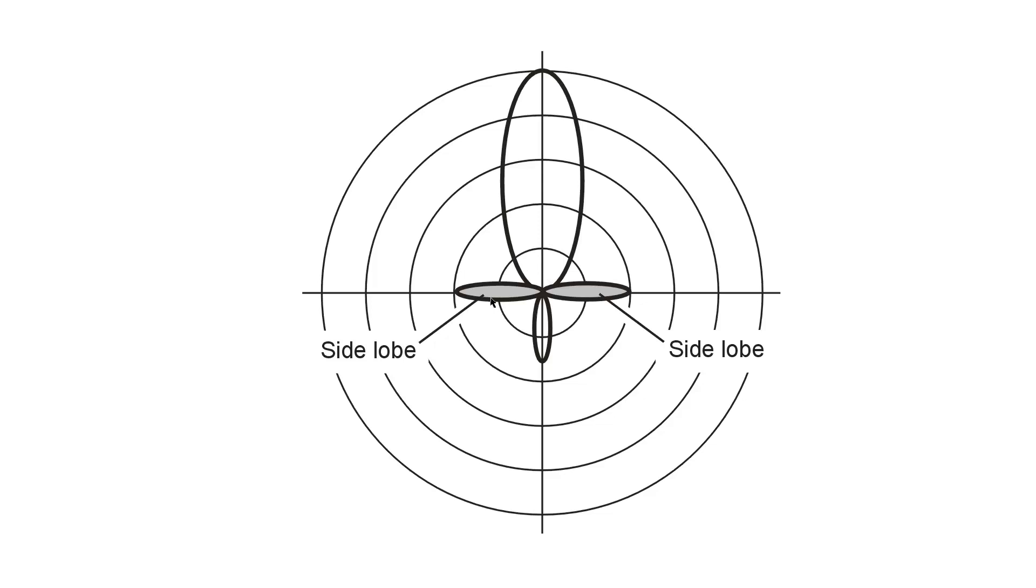The side lobes are simply the radiation smaller maxima, or minor maxima, if that makes any sense, pointing at right angles to the main lobe and also at a right angle to the back lobe, or rear lobe. They are much weaker than the main lobe.